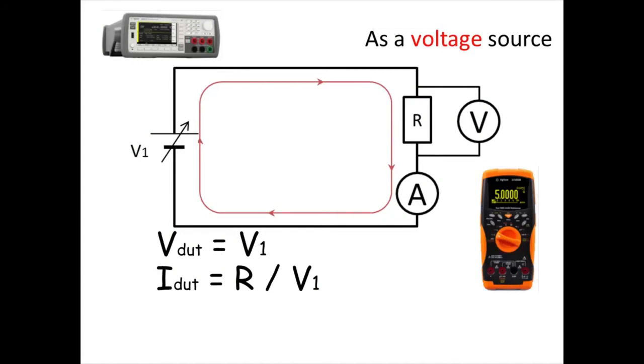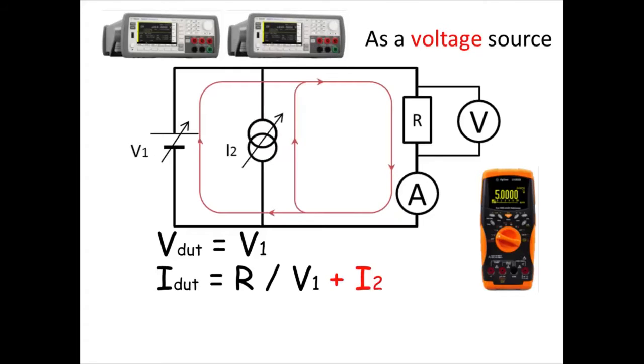We can increase the applied current by connecting a current source in parallel. There is no ideal source in the real world, so you need to pay attention to the voltage limit of the current source and the current limit of the voltage source.